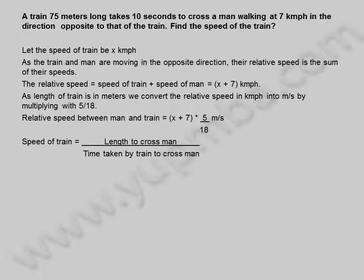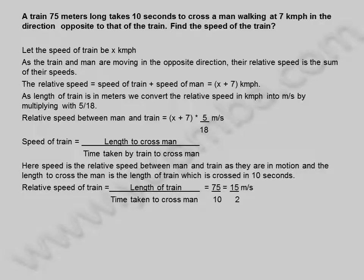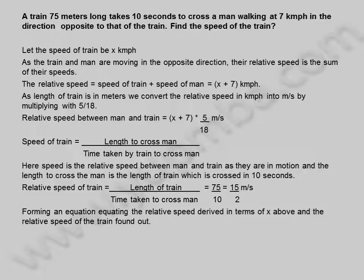Speed of train is equal to length to cross man divided by time taken by train to cross man. Here speed is the relative speed between man and train as they are in motion, and the length to cross the man is the length of train which is crossed in 10 seconds. Relative speed of train is equal to length of train divided by time taken, which is 75 divided by 10, equal to 15 by 2 meters per second.